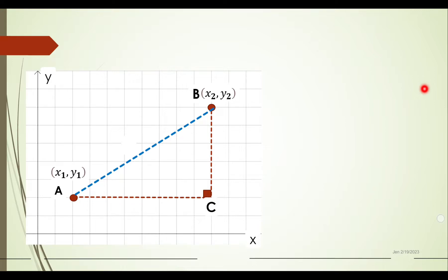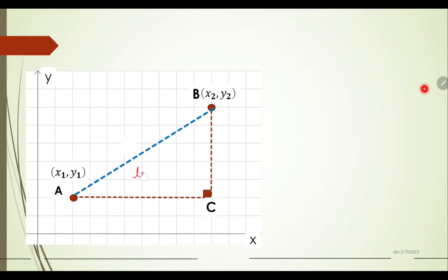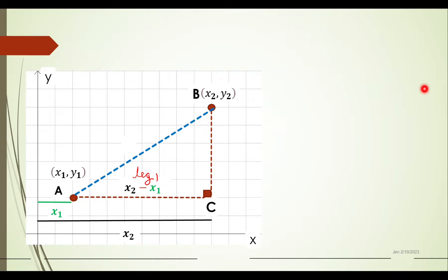Since our triangle has a right angle, it is a right triangle and we can apply the Pythagorean theorem. We are interested in the measure of leg AC. The distance from the y-axis to point C is x₂, and the distance from the y-axis to point A is x₁. Removing one from the other, we arrive at the measure of leg 1: x₂ minus x₁.